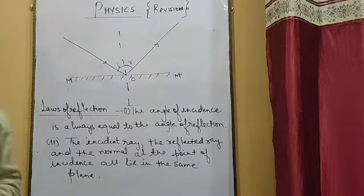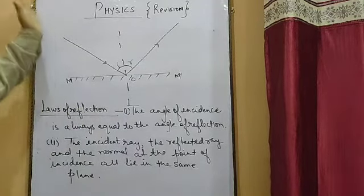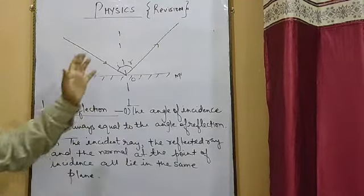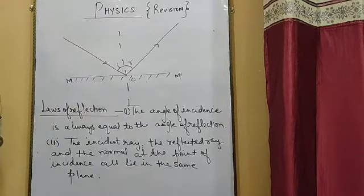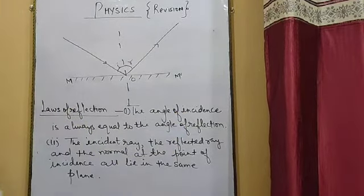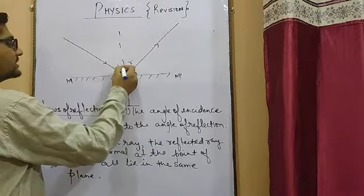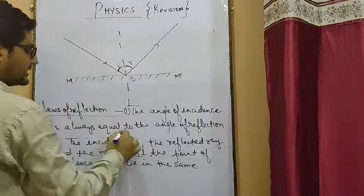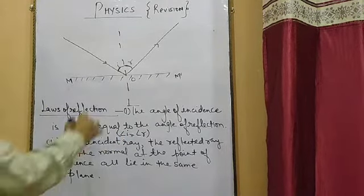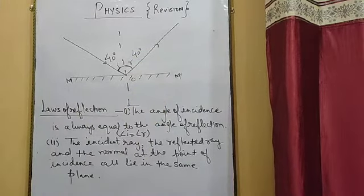Now since we know the different terms related to reflection of light, we should know the laws of reflection. Suppose a mirror is there and an incident ray strikes on the smooth surface and reflects back. The first law of reflection states that the angle of incidence is always equal to the angle of reflection. For example, if a ray of light strikes at an angle of 40°, it should reflect back at the same angle of 40°.